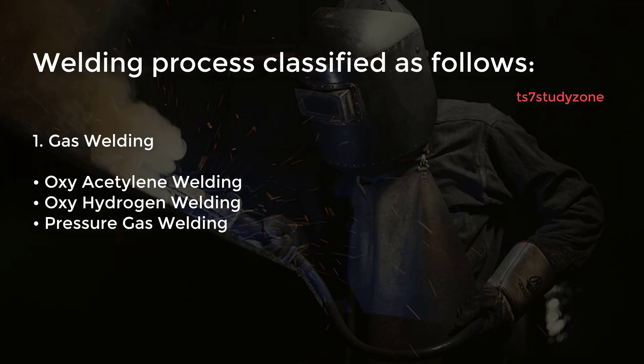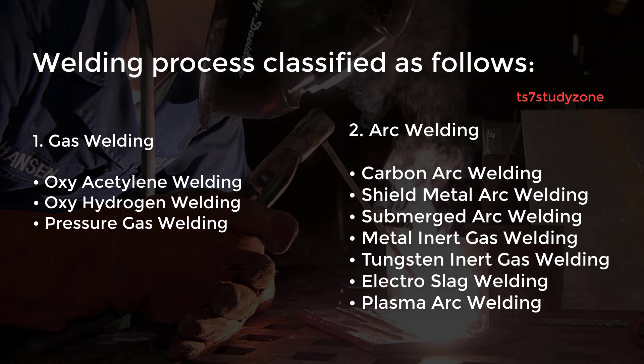One: gas welding, further classified as oxy-acetylene welding, oxy-hydrogen welding, and pressure gas welding. Two: arc welding, further classified as carbon arc welding, shield metal arc welding, submerged arc welding, metal inert gas welding, and tungsten inert gas welding.